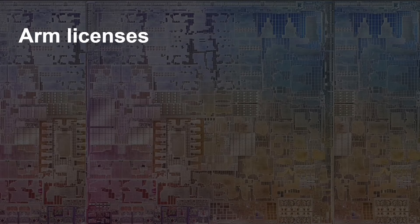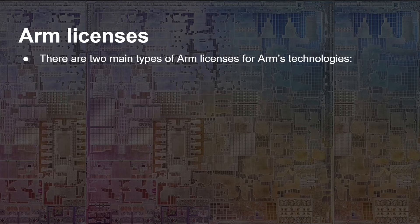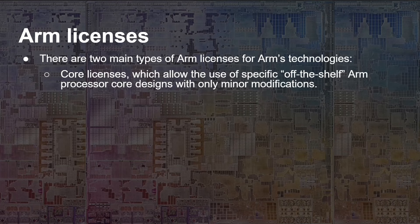There are two types of ARM license. A core license allows you to take a specific off-the-shelf processor — like the Cortex-A725 — and incorporate that into your chip. You can maybe change the amount of cache or adjust a few small things, but that core design is essentially fixed. You can specify a bigger L2 cache within a given range, but you cannot change the interior design, modify it, or create a new CPU based on that design.